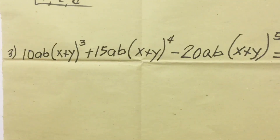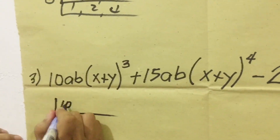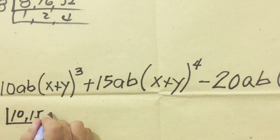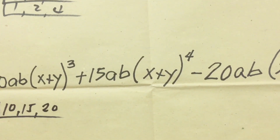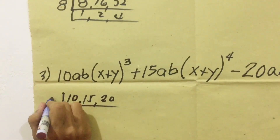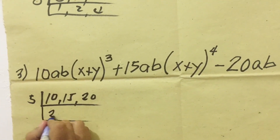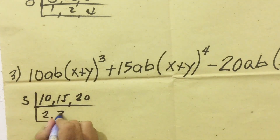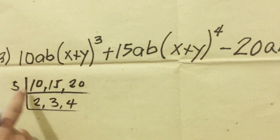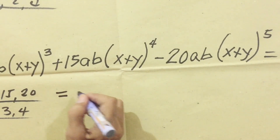Let's solve number 3 — same process. We take the numerical coefficients: 10, 15, and 20. The greatest common factor is 5. 10 divided by 5 equals 2; 15 divided by 5 equals 3; 20 divided by 5 equals 4. The remaining values have no common factor, so 5 is our answer for the numerical part.